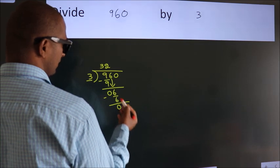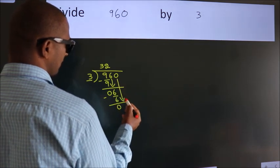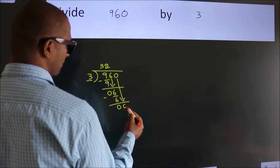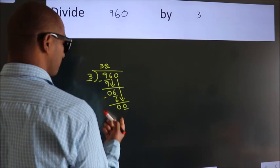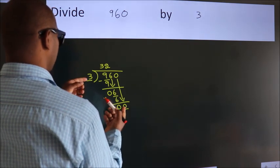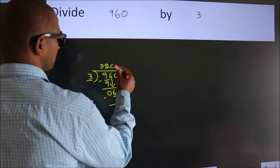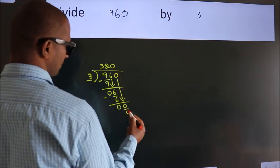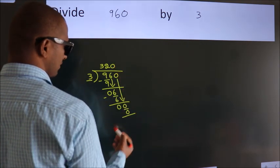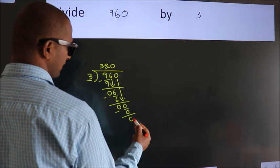After this, bring down the beside number. So 0 down. So 0. When do we get 0? In 3 table. 3 times 0, 0. Now we subtract. We get 0.